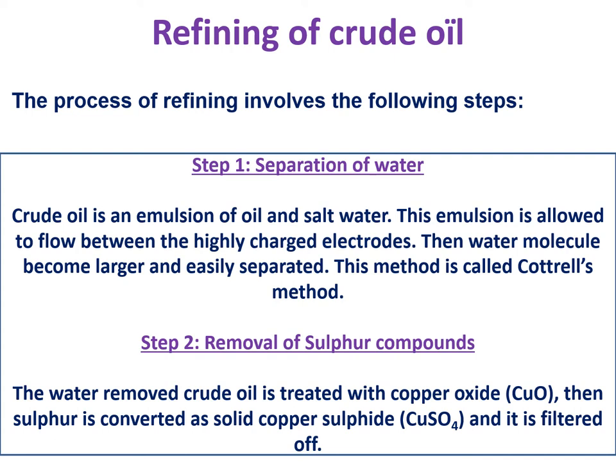Next is removal of sulfur compounds. When crude oil has a high ratio of sulfur, copper oxide is added to the crude oil. Treating with copper oxide produces copper sulfide, which is a solid, and we can easily filter it off. Like this, we can remove water and sulfur present in crude oil as impurities.